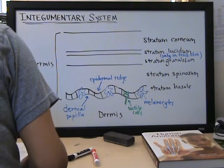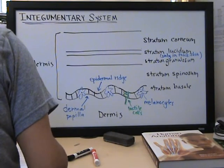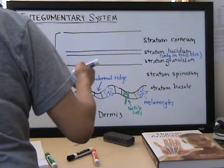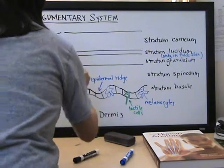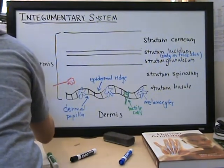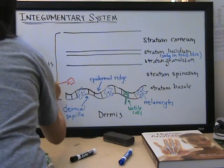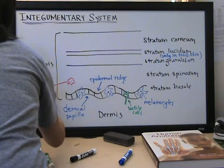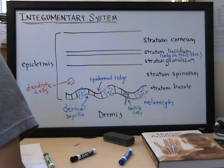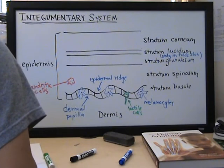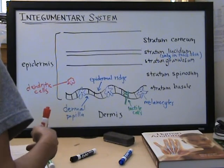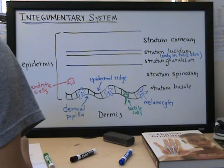Let's see, we also have dendritic cells. Dendritic cells, sometimes called dendrocytes, they're macrophages, so they're part of the immune system that ingests bacteria and other foreign material that are there.